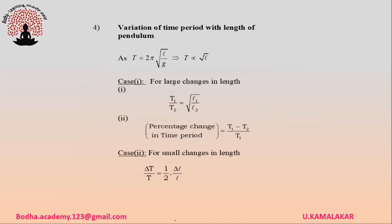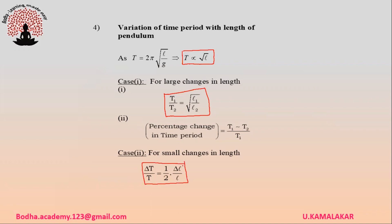Variation of time period with length of pendulum. We know that T = 2π√(l/g) when g is constant. For large changes in length, T₁/T₂ = √(l₁/l₂), and the percentage change in time period is given as (T₁ − T₂)/T₁. For small changes in length, ΔT/T = (1/2)(Δl/l).